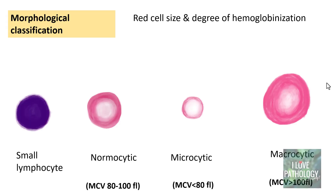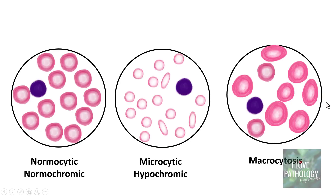As a brief recap, we classify red blood cells based on their size relative to the nucleus of a small lymphocyte into microcytes, normocytes, and macrocytes. Similarly, anemia is morphologically classified as normocytic normochromic anemia, microcytic hypochromic anemia, and macrocytic anemia or macrocytosis.